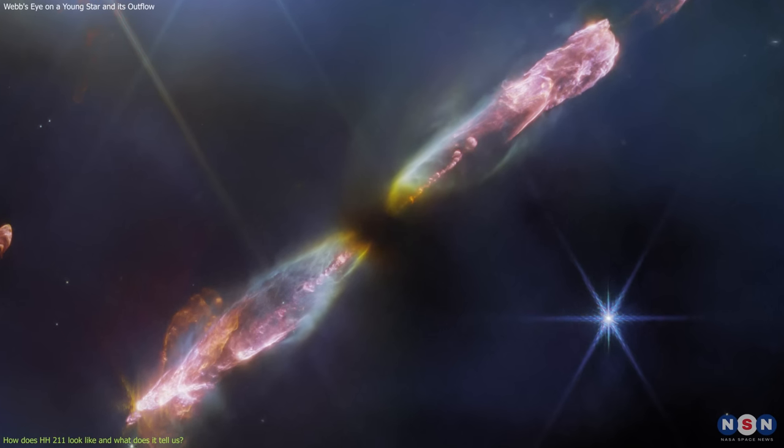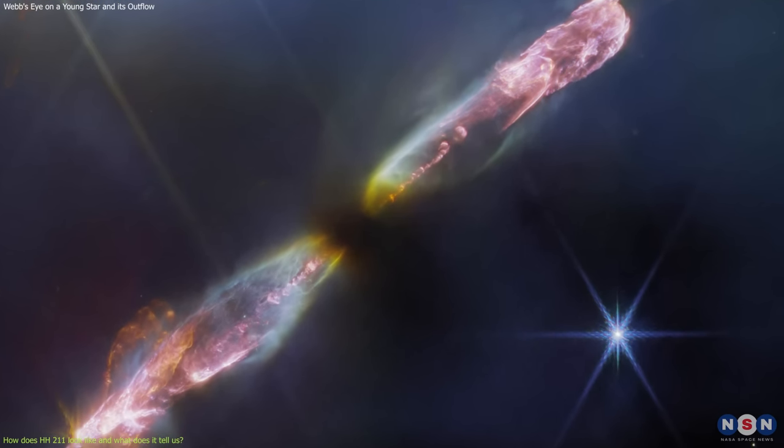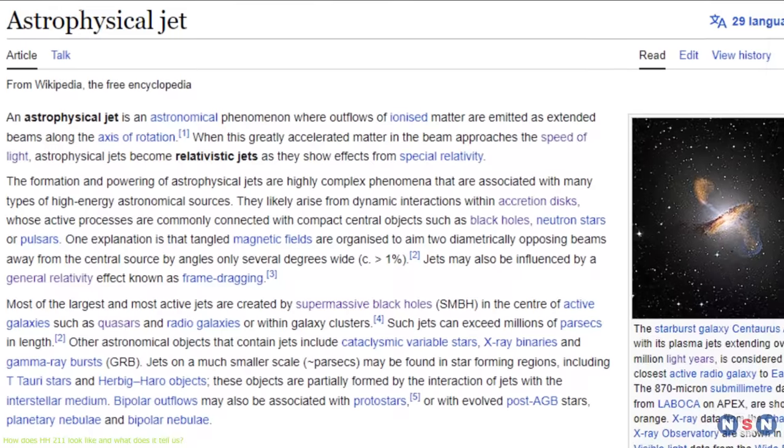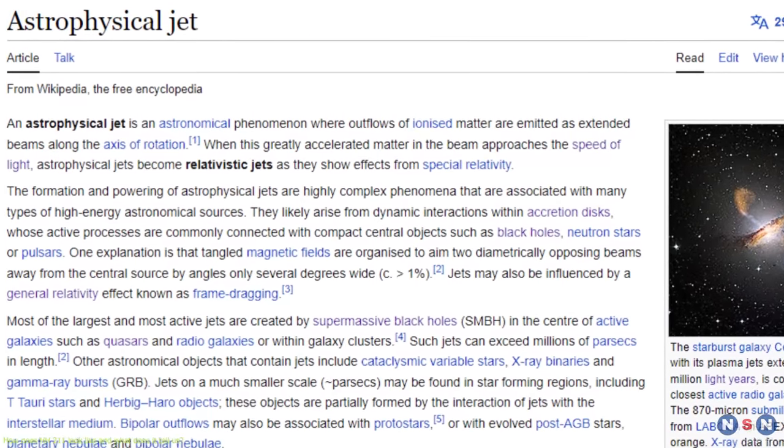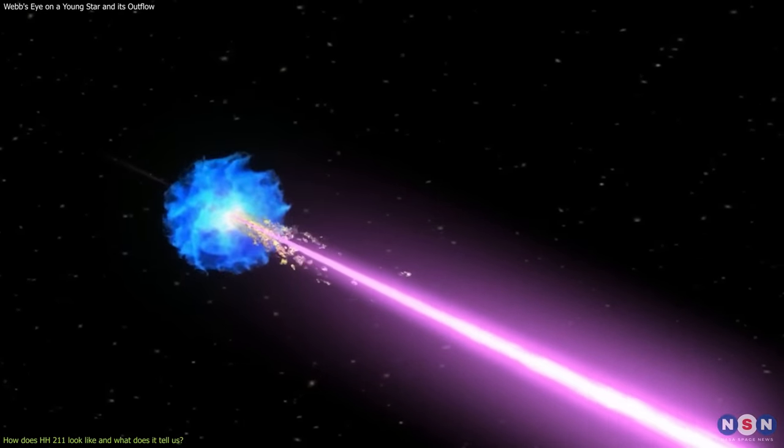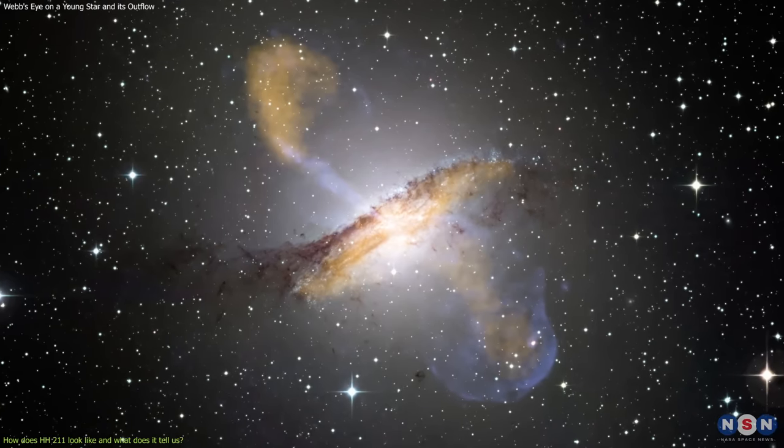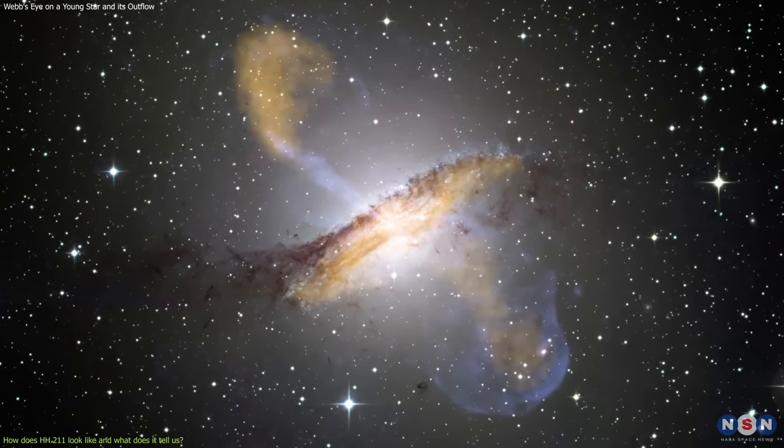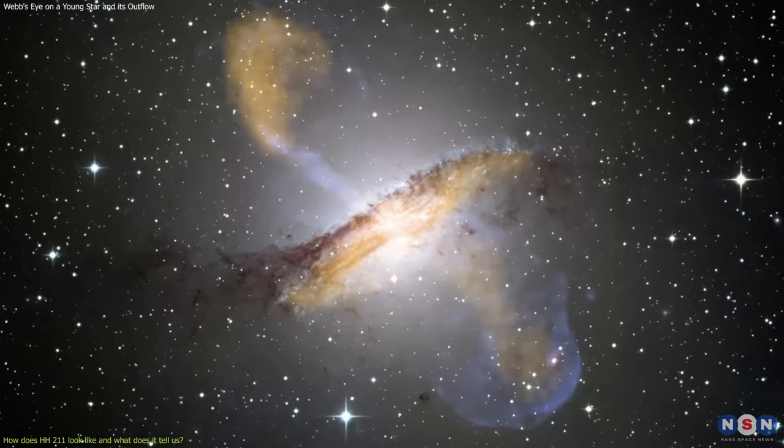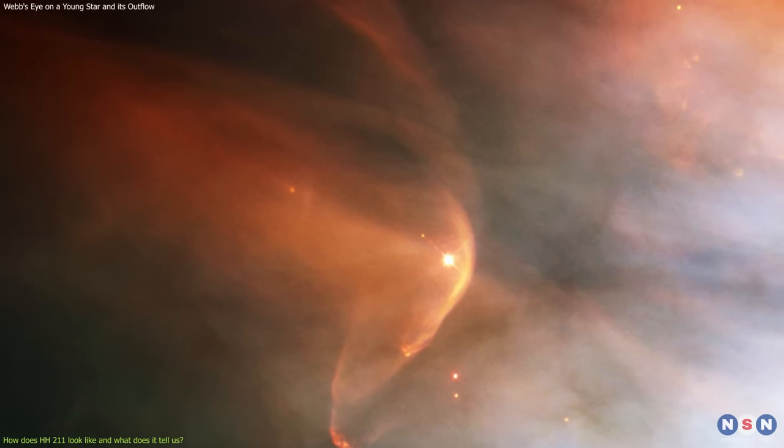As the star grows, it also ejects some of the material in opposite directions along its rotation axis. This is called a jet, and it is a common feature of young stars. The jet is very narrow and collimated, meaning that it does not spread out much as it travels away from the star. It interacts with the surrounding medium, creating shock waves that heat up and compress the gas. These shock waves are called bow shocks, because they have a shape similar to the bow wave created by a boat moving through water.